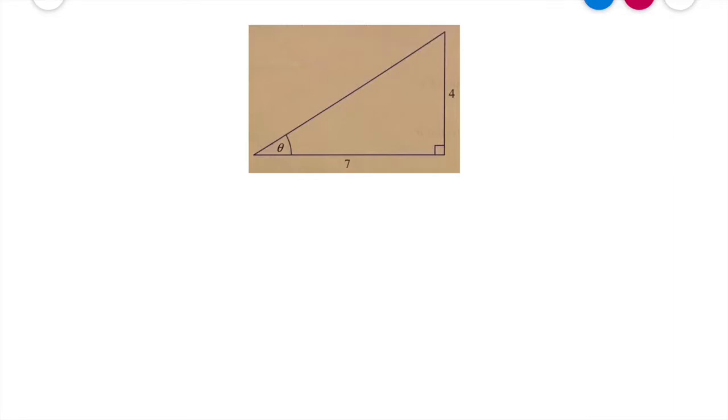So in this triangle we're looking to find this angle here. Now that weird funny shape is called theta. It kind of looks like a zero with a line through it. That's an old Greek symbol and we call that theta, t-h-e-t-a.